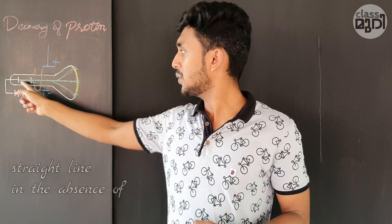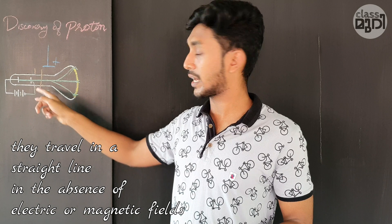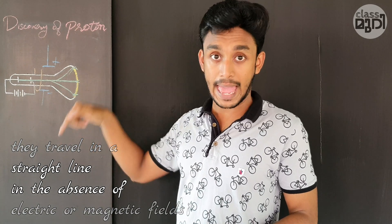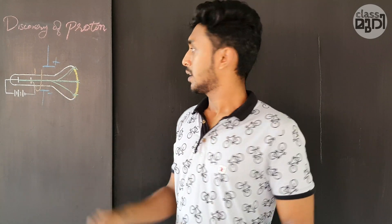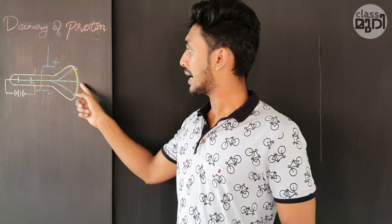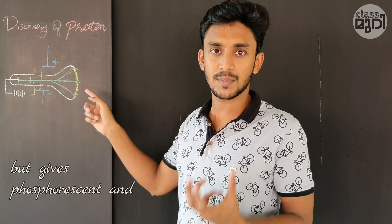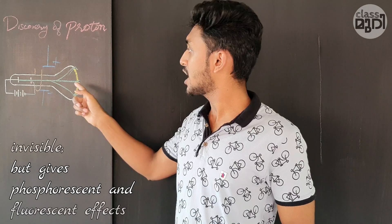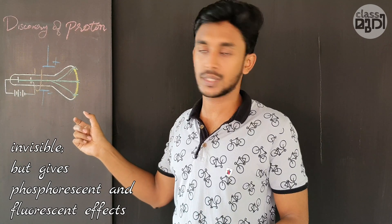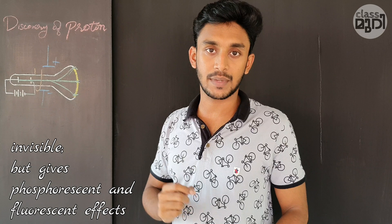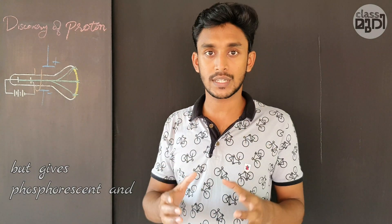The canal rays travel in a straight line. This is how we detect them. They are invisible but produce a phosphorescent effect. We detect them through this invisible fluorescent effect.